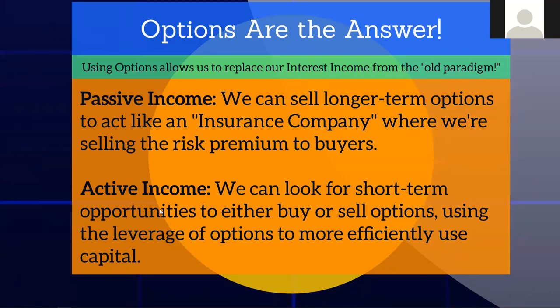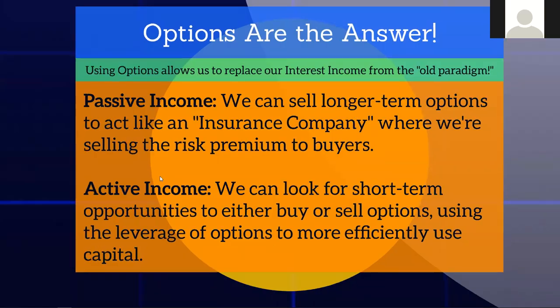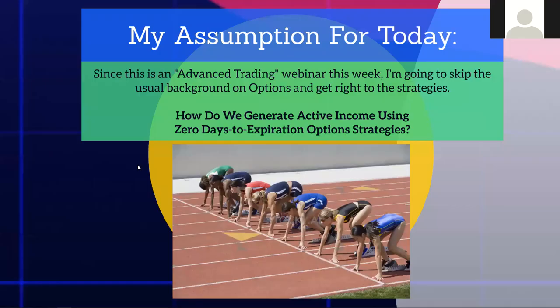We can trade options. With options, we can create passive income by turning ourselves into an insurance company — selling the risk premium to buyers and managing our risk on the side. We can also pursue active income: looking for short-term opportunities to buy or sell options using the leverage of options to more efficiently use capital. That's mostly what we're going to be talking about today.